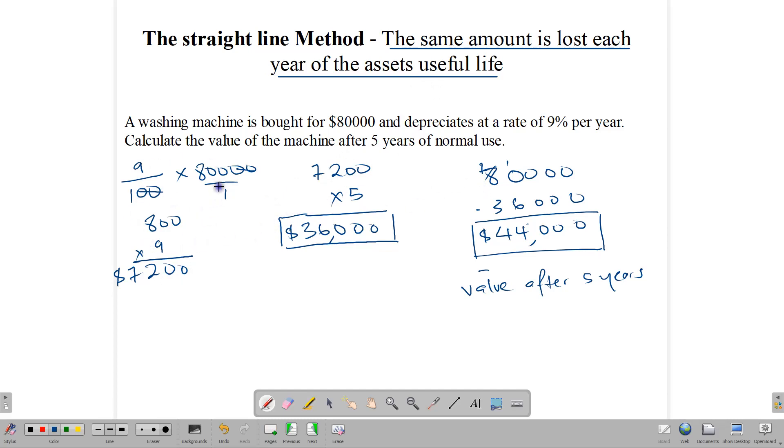So the method is simply this: you find the percentage, whatever the percentage is, you multiply it by the number of years, get that sum, and then you subtract from your initial purchase value that number that you got. And that's pretty much how the straight line method works in that you are losing the same amount of money each year for the product's useful life.